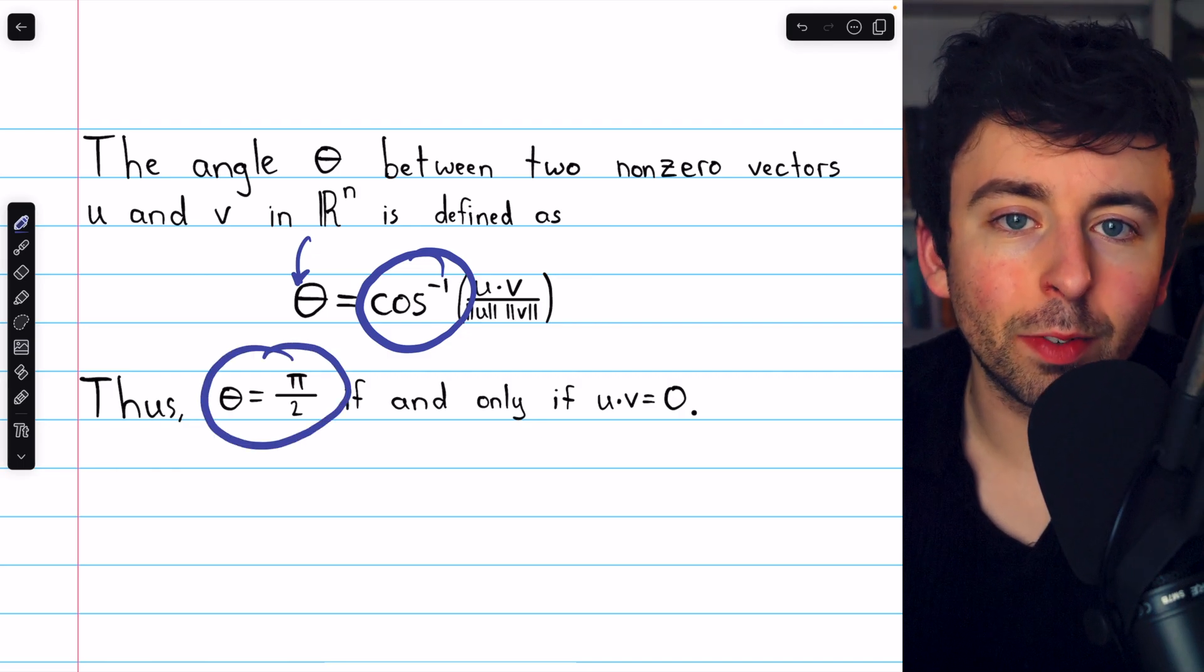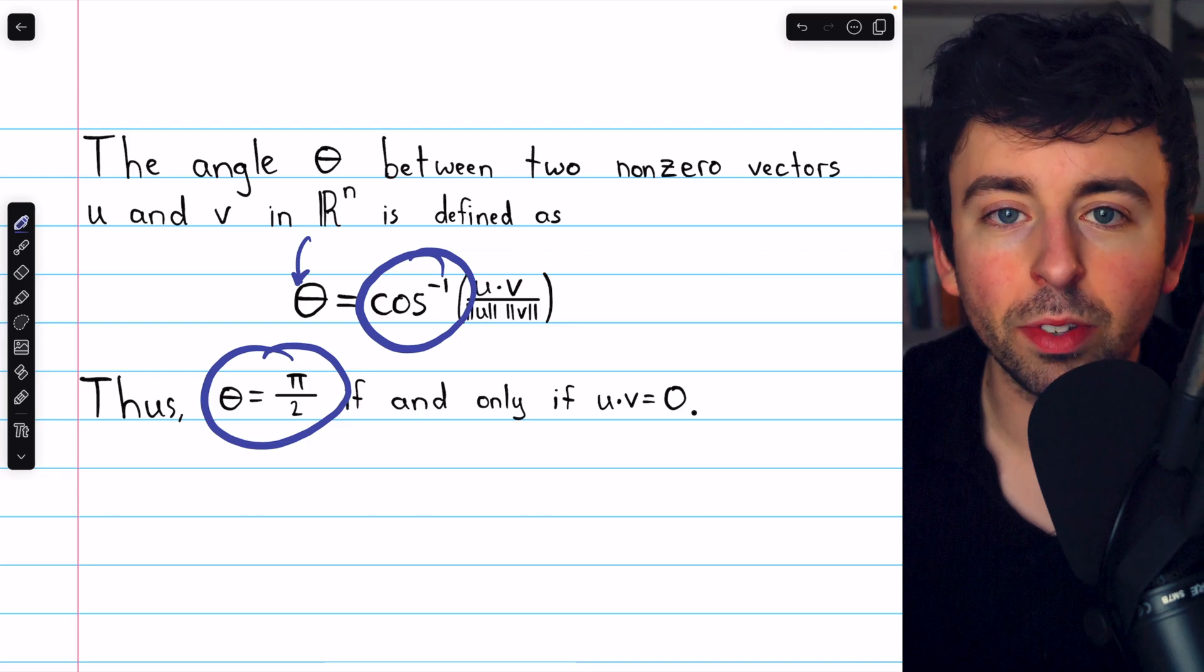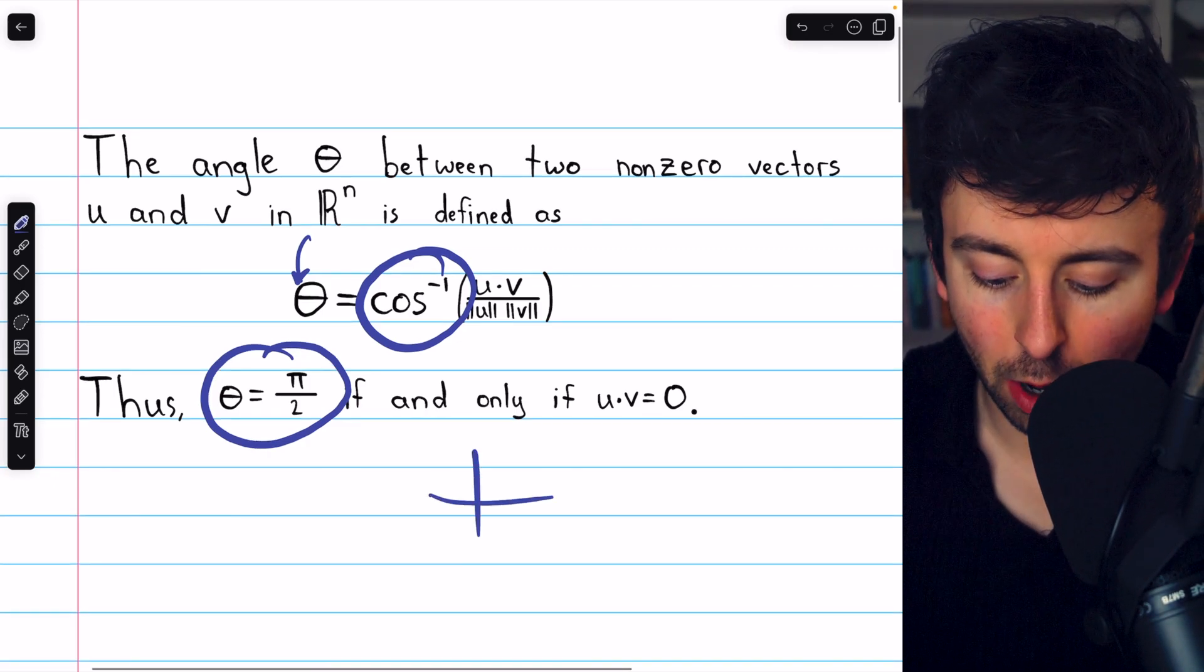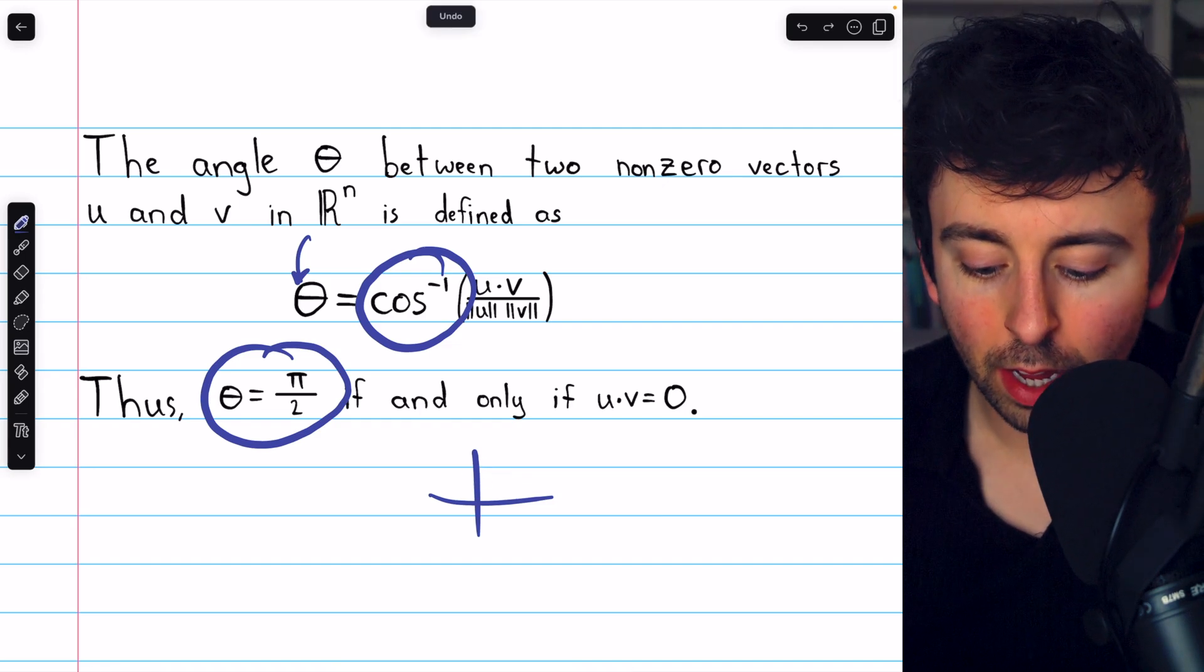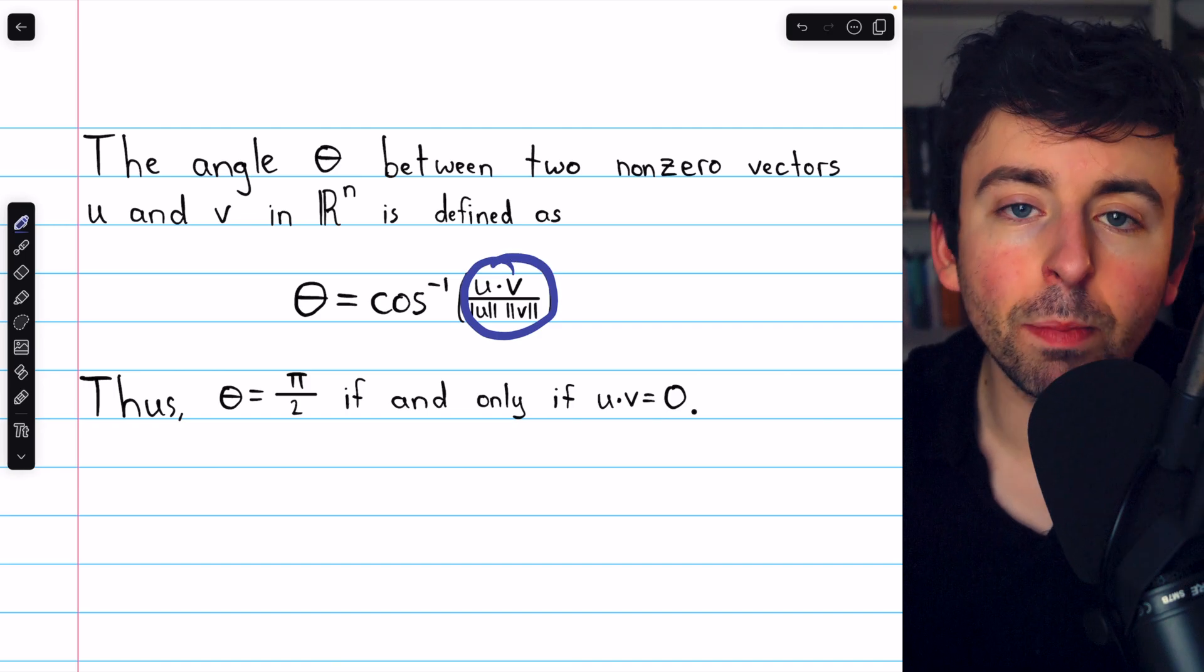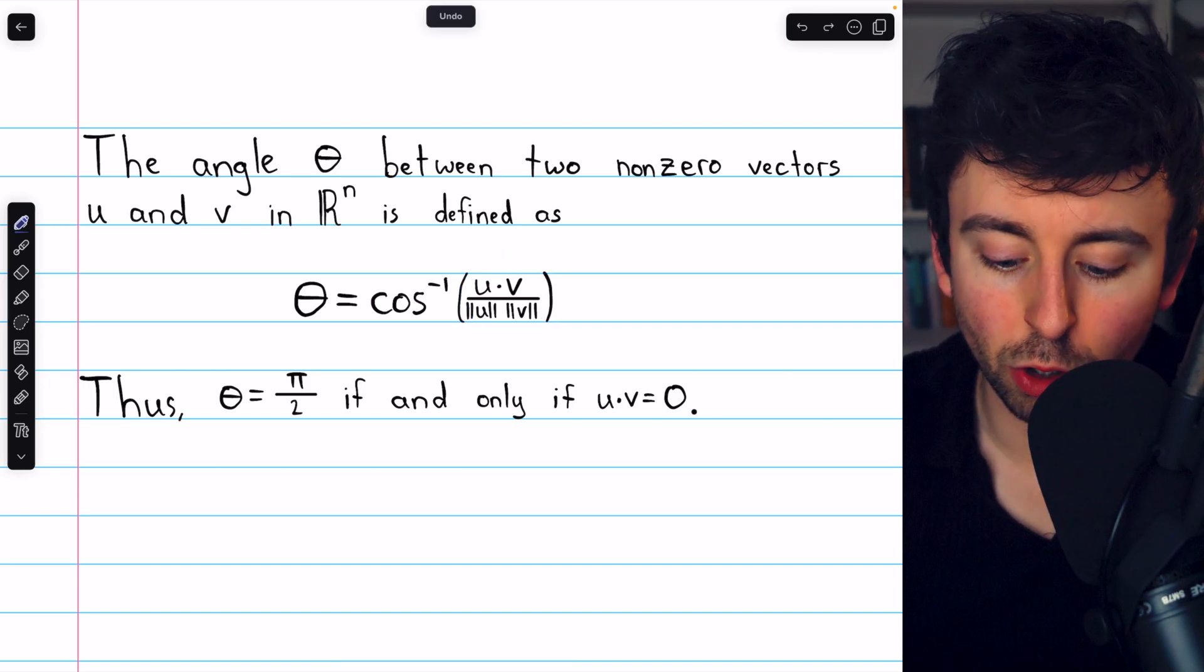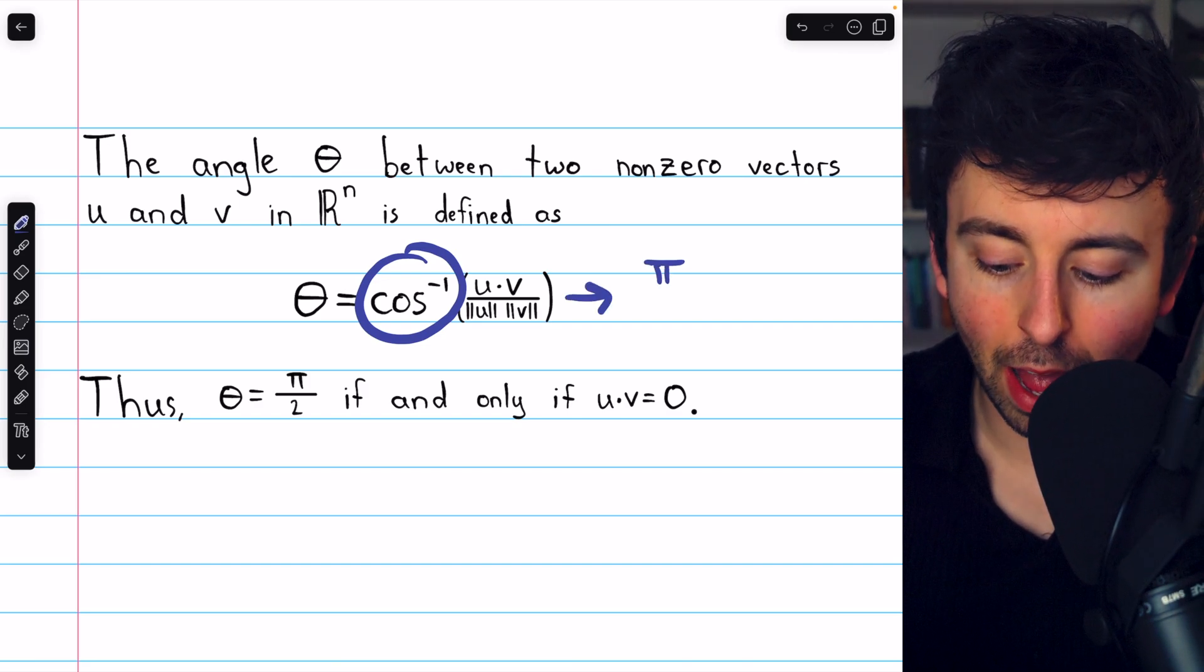Theta, we want to equal pi over 2. Typically, we think of the angle as the input of cosine. And cosine of pi over 2 is 0. If you remember your unit circle, cosine there is 0. So we have to ask, what would make the input here 0? Because if we put 0 into the inverse cosine, that's what's going to give us pi over 2.